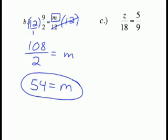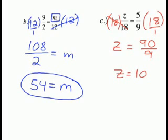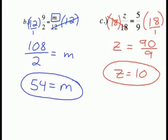For part C, we have Z over 18 equals 5 over 9. Again, we're dividing Z by 18. To undo division, we must multiply both sides by 18. On the left side, 18 and 18 cancel each other out, and we're left with Z. On the right side, we have 5 ninths times 18. We write 18 as 18 over 1. Multiply straight across the top: 5 times 18 equals 90, and 9 times 1 equals 9. 90 divided by 9 is 10, so Z equals 10.